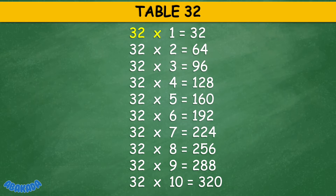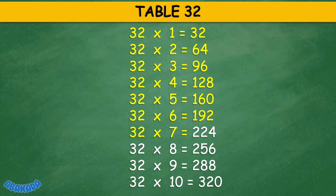Table 32: 32 times 1 equals 32, 32 times 2 equals 64, 32 times 3 equals 96, 32 times 4 equals 128, 32 times 5 equals 160, 32 times 6 equals 192, 32 times 7 equals 224, 32 times 8 equals 256.